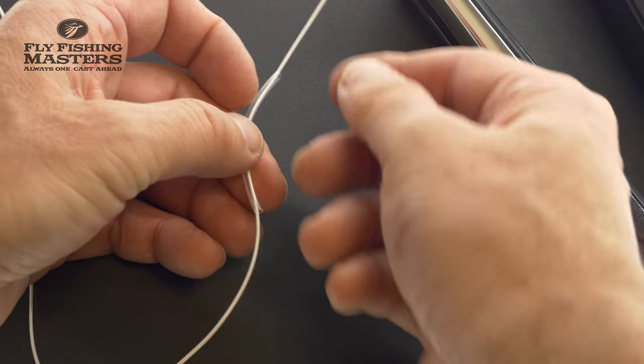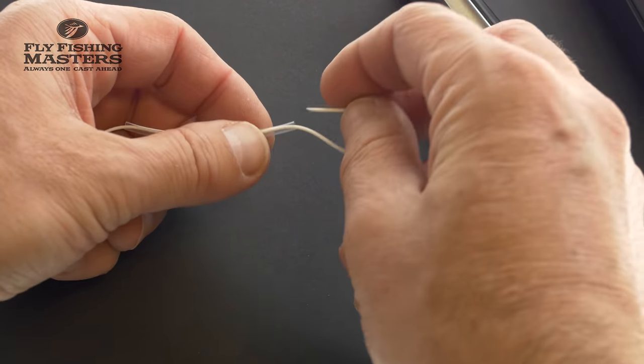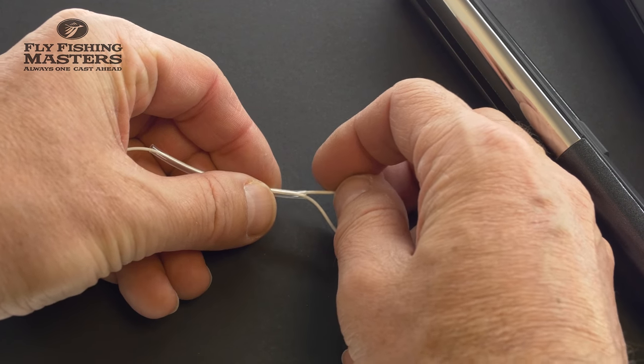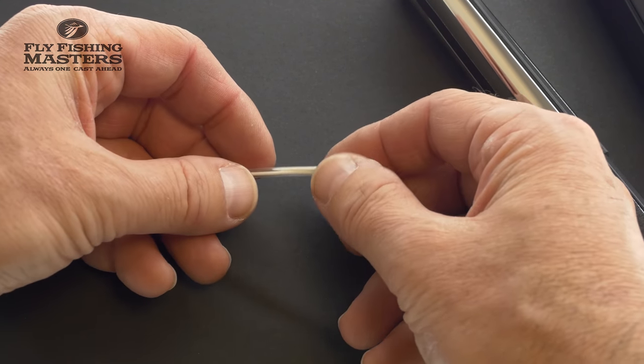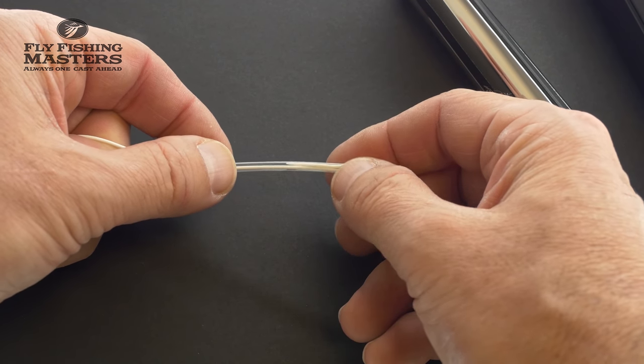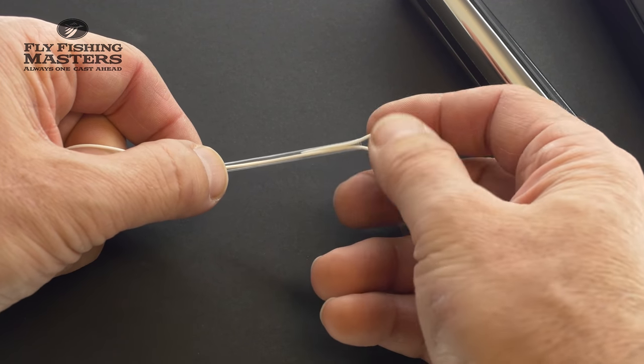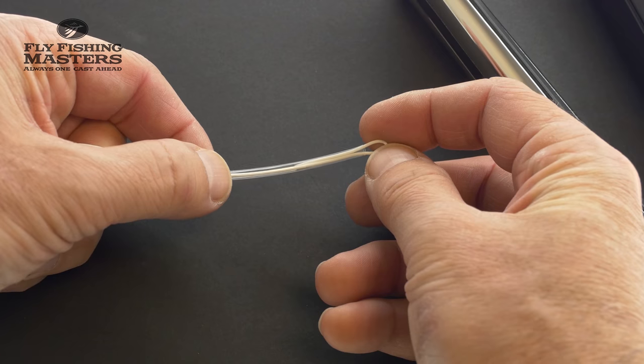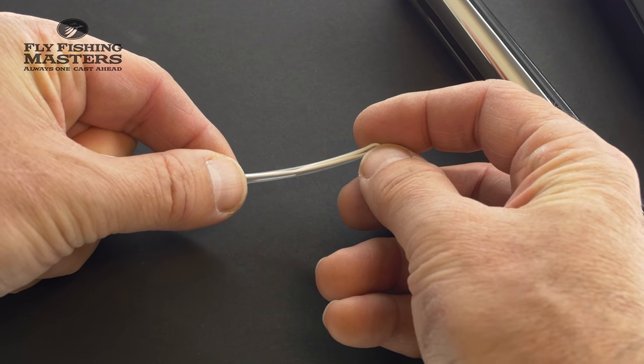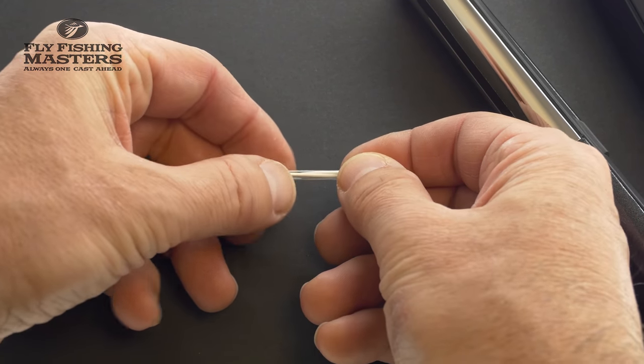Put the tip of the fly line into it and then we put it back in. Be sure to put the whole loop into the tubing like this.